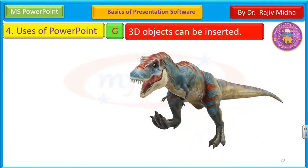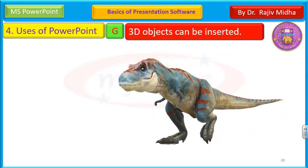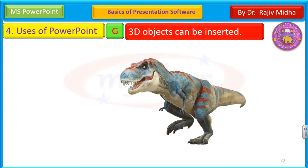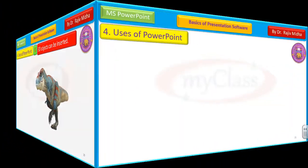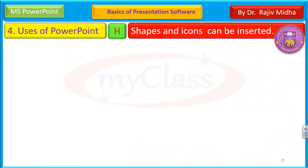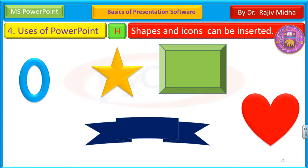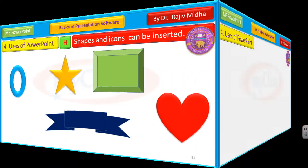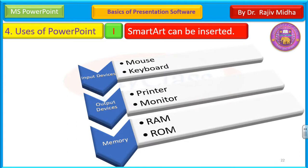G: 3D objects can be inserted. बहुत सारे 3D objects net के ऊपर आपको freely available हैं — आप उन में से अपनी मतलब के 3D objects को choose कीजिए, आप अपनी presentation को और beautiful बना सकते हैं। H point: shapes and icons can be inserted. Microsoft ने presentation program के अंदर बहुत सारे inbuilt shapes and icons दे दिए — you can make use of those icons and shapes. I: smart art can be inserted. A number of inbuilt smart art programs are there — you can make use of these smart art objects according to your requirement.